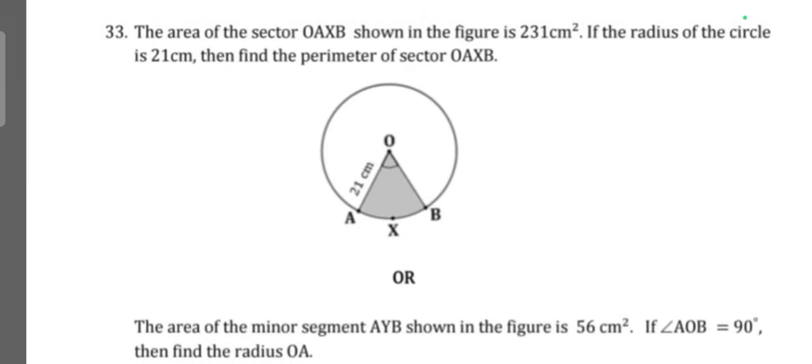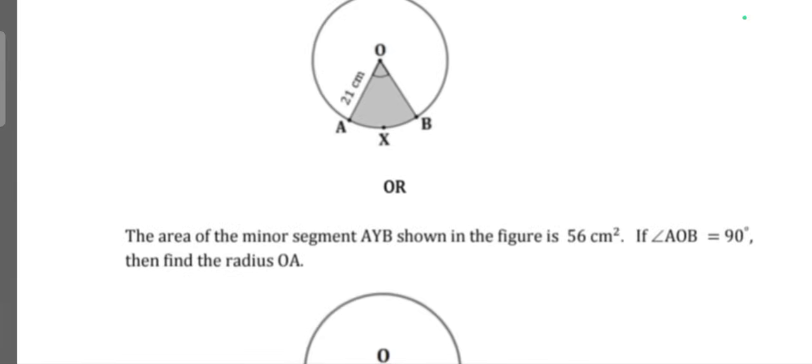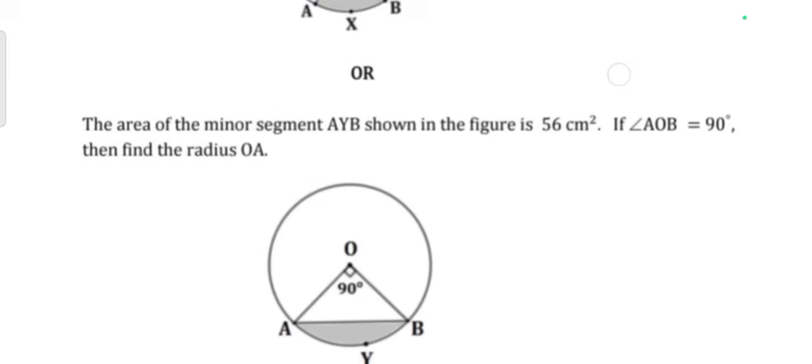Question 33: The area of sector OAXB shown in the figure is 231 square centimeters. If the radius of the circle is 21 centimeters, then find the perimeter of sector OAXB. Or: The area of minor segment AB shown in the figure is 56 square centimeters. If angle AOB is 90 degrees, then find the radius OA.